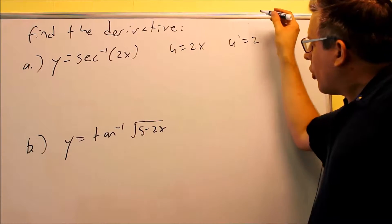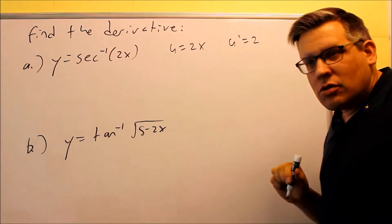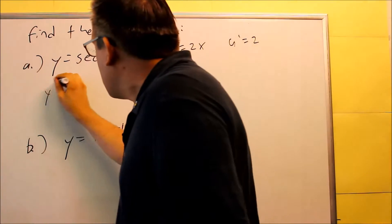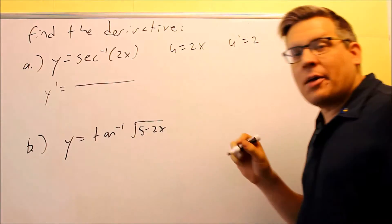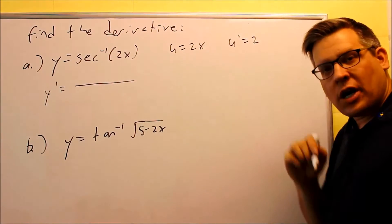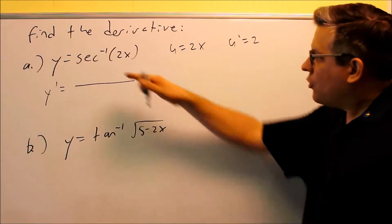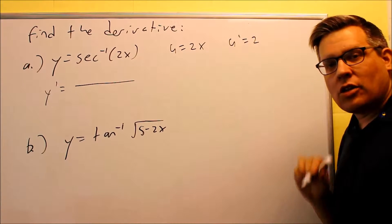So now we're going to put this all together into the formula. For that one, the formula goes on top, it's u-prime. Again, you want to refer back to that list of the derivatives for the inverse secant that I had on the board earlier.